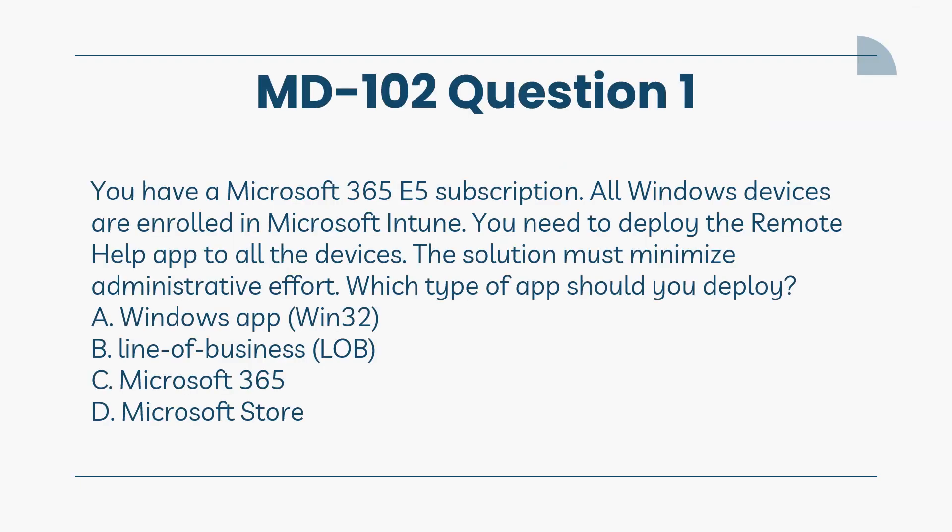You have a Microsoft 365 E5 subscription. All Windows devices are enrolled in Microsoft Intune. You need to deploy the Remote Help app to all the devices. The solution must minimize administrative effort. Which type of app should you deploy?